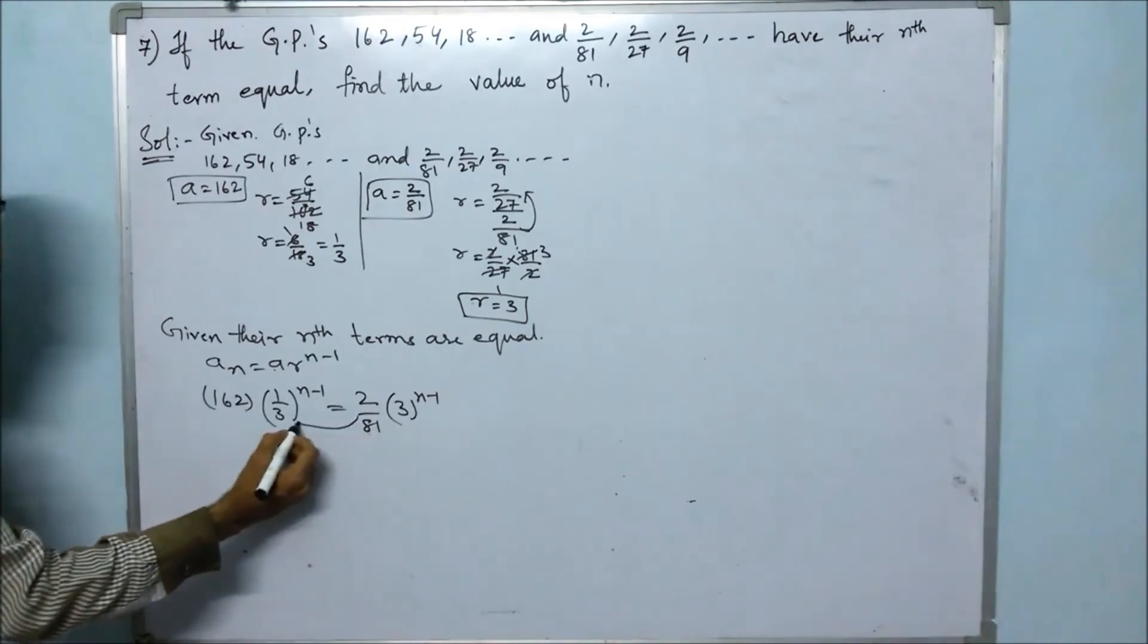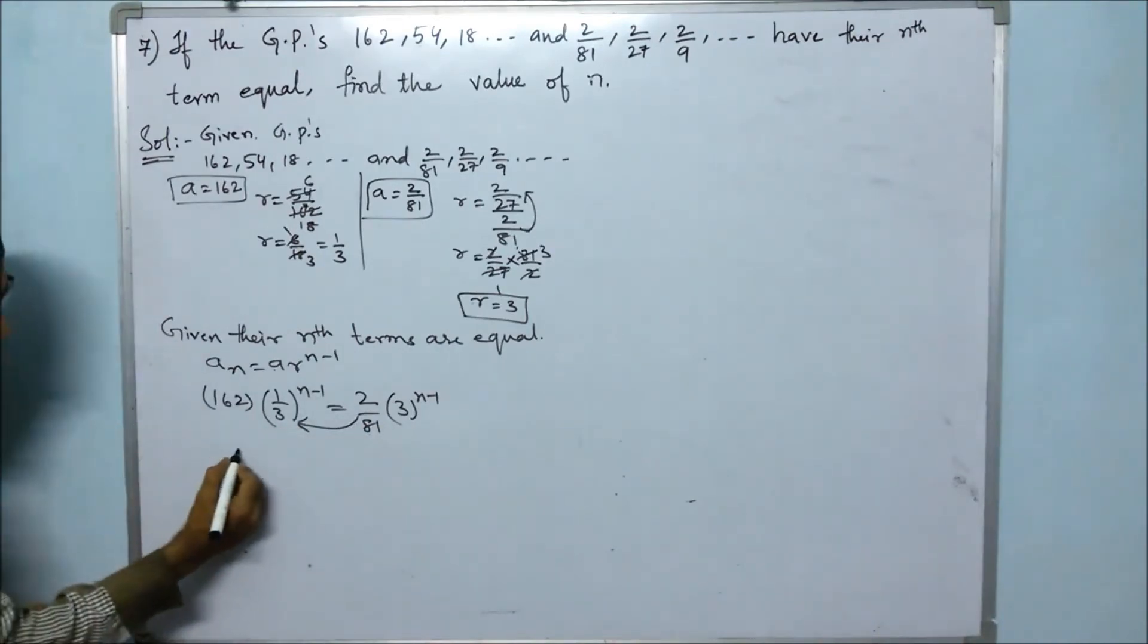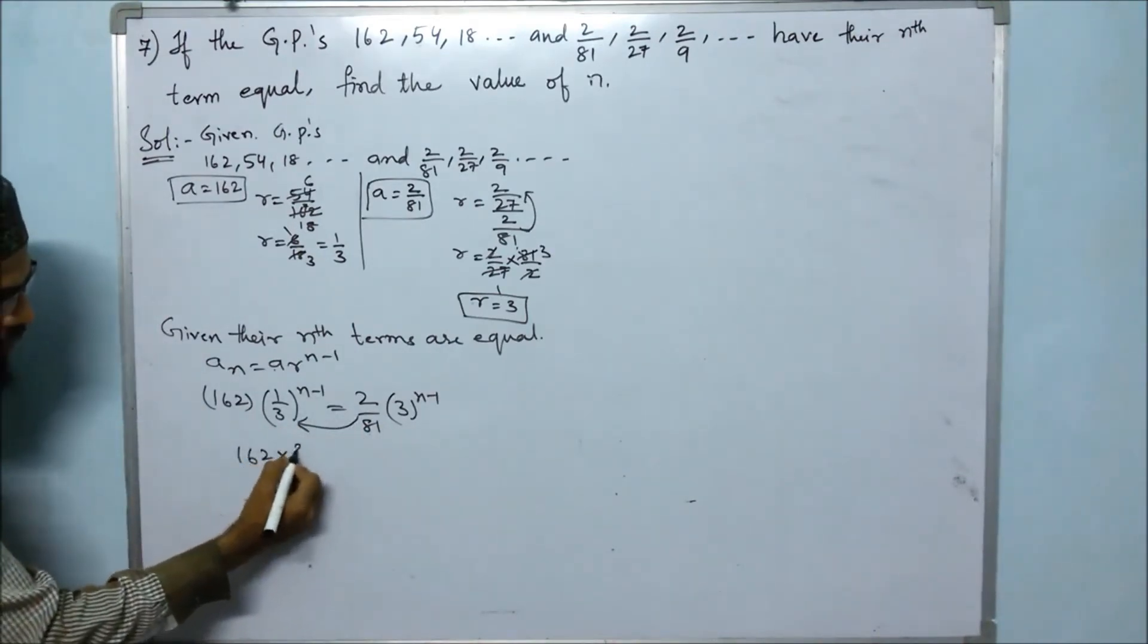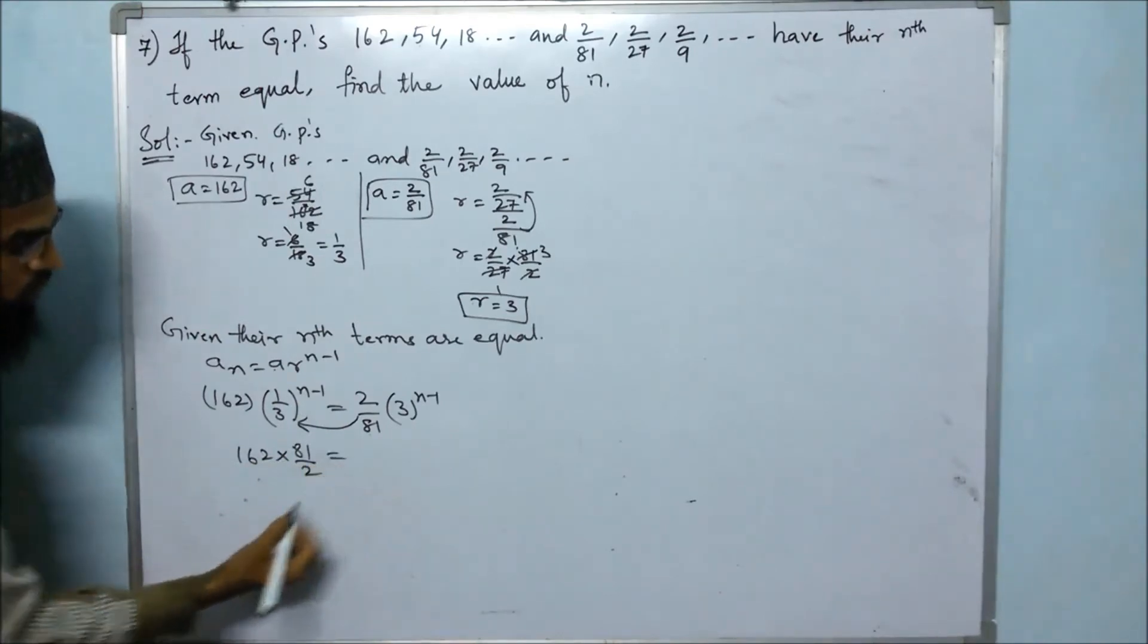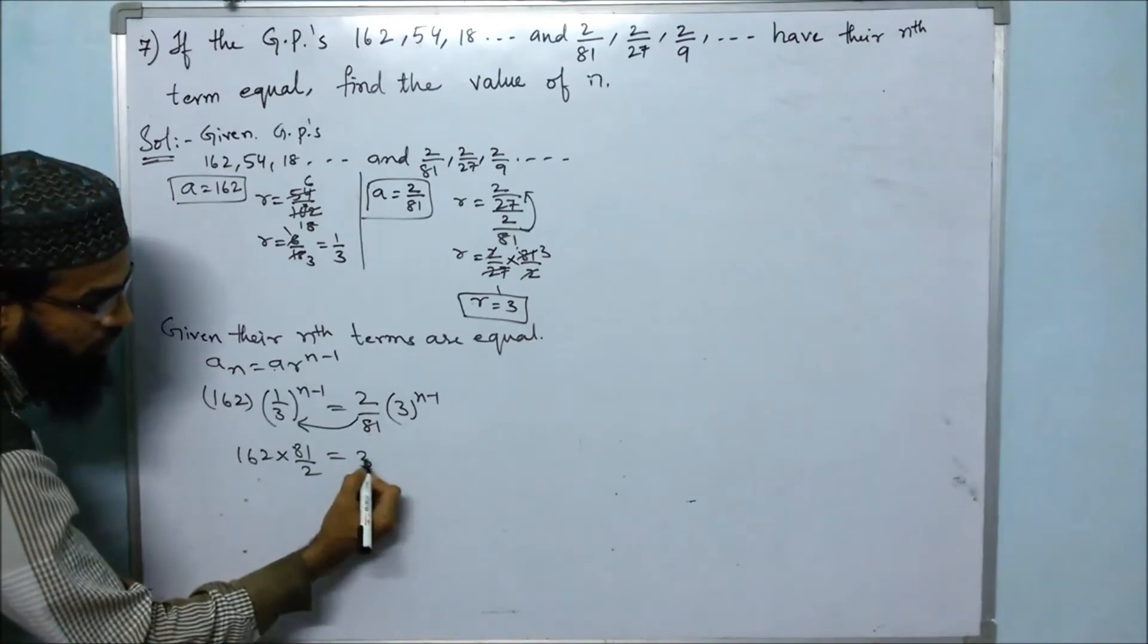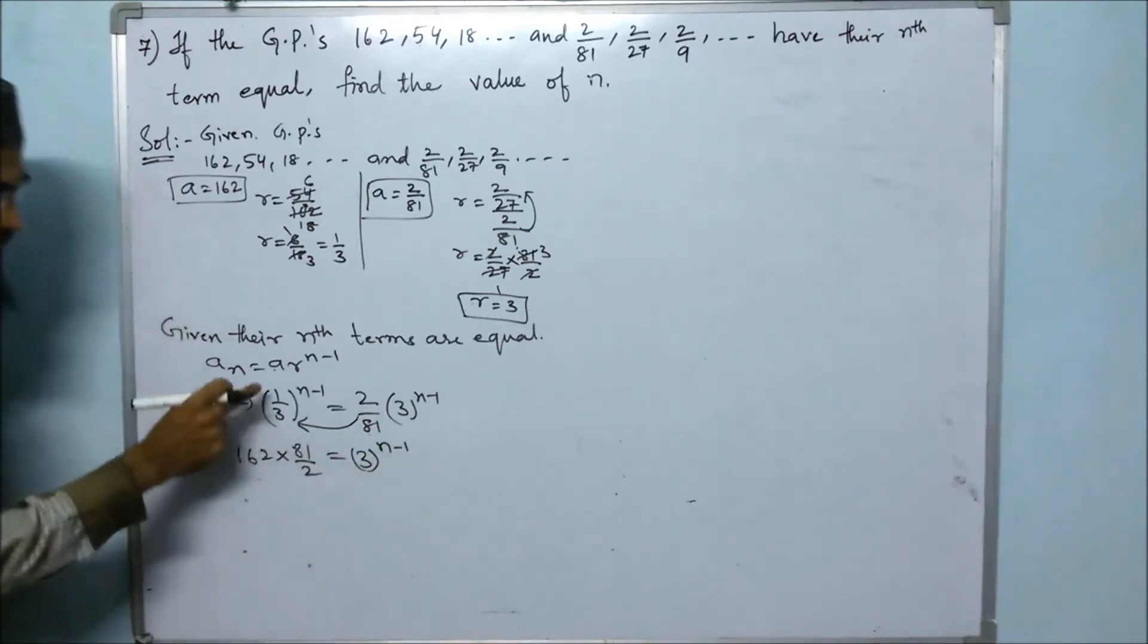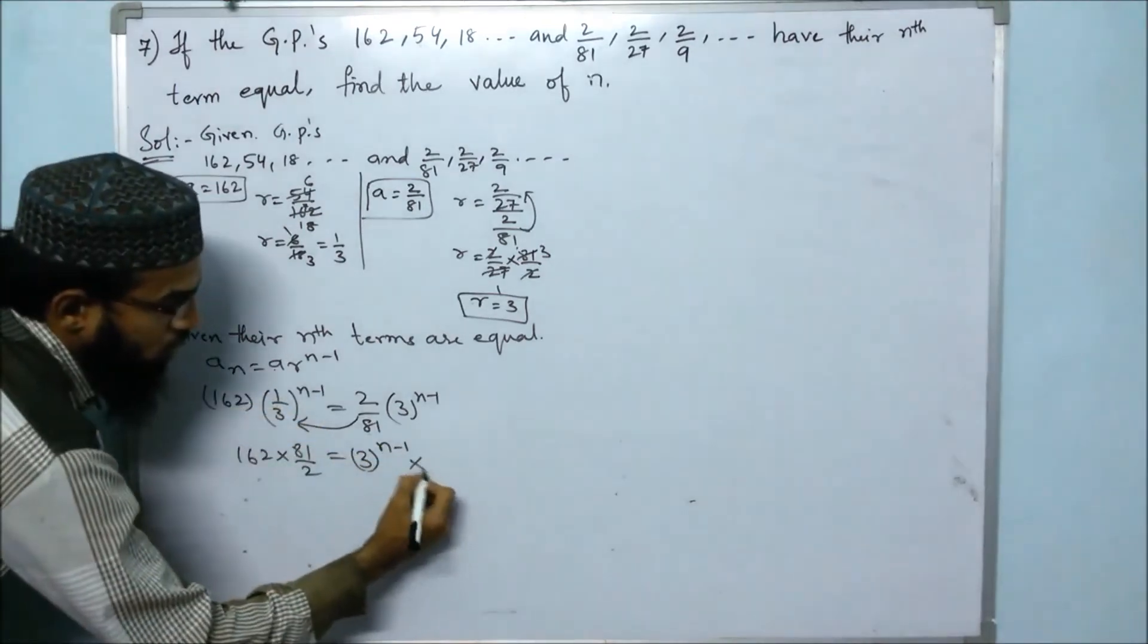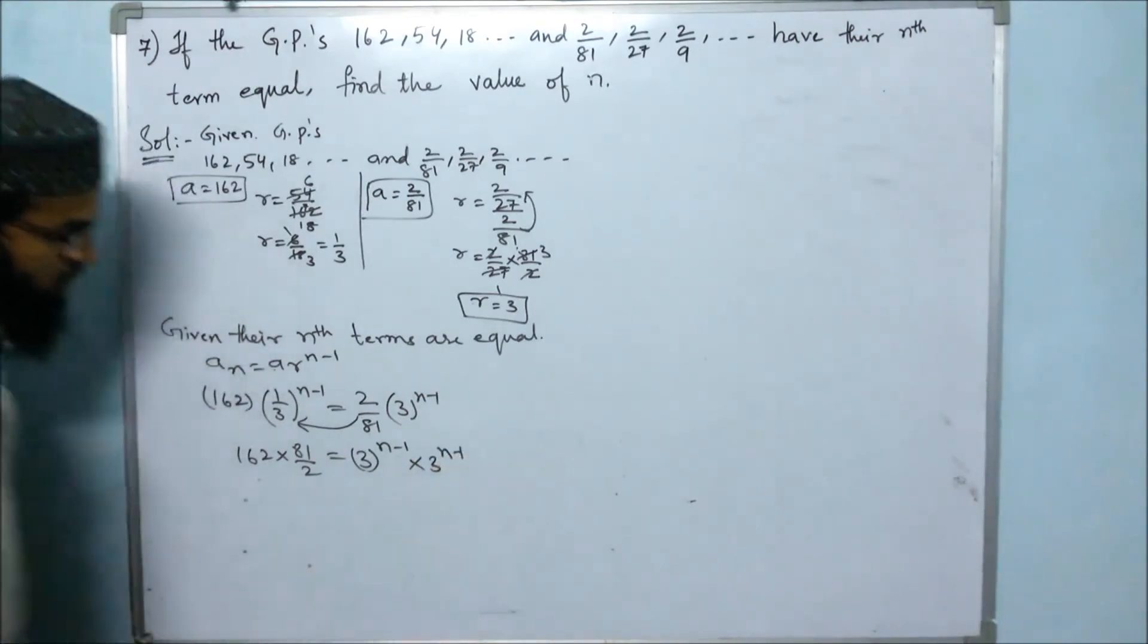Moving 2/81 to the left side: 162 times 81/2 equals, and moving (1/3) to the right. The reciprocal of 1/3 is 3, so we get 3 to the power of n minus 1.